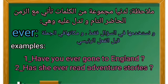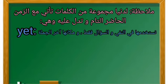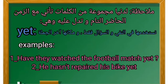Has she ever read adventure stories? — هل سبق لها أن قرأت قصص المغامرات؟ هنا استخدمنا ever قبل الفعل الرئيسي في السؤال فقط. أما yet فنستخدمها في النفي والسؤال فقط، ومكانها آخر الجملة. مثال: Have they watched the football match yet? — هل هم قد شاهدوا مباراة كرة القدم؟ He hasn't repaired his bike yet — هو لم يصلح دراجته بعد.